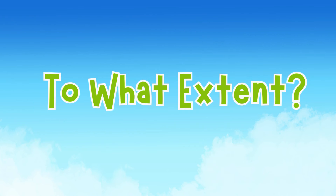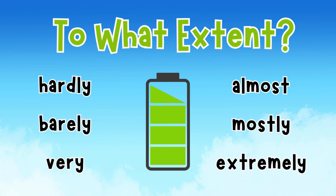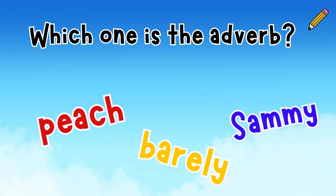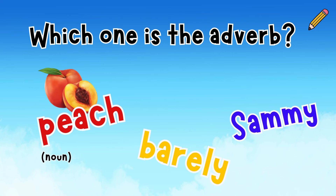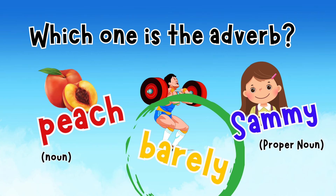Let's go to the last one: to what extent. Here are a few adverb examples that answer this question. Repeat after me: hardly, barely, very, almost, mostly, extremely. Take out your marker — it's time to find the adverb. Is it peach, barely, or Sammy? We know peach is a noun — it's a thing. Sammy is somebody's name, a proper noun that starts with a capital letter. Sammy does not describe to what extent we did something. That means our adverb is the word barely.